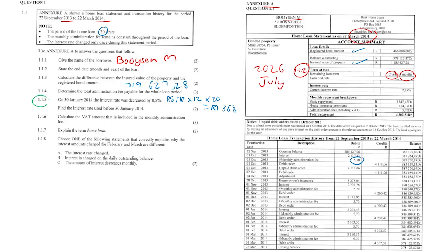Question 1.1.5: On the 30th of January 2014, the interest rate was decreased by 0.5%. Find the interest rate used before the 30th of January 2014. The current interest rate is 7.25%, so we add back the 0.5% — it was previously more — giving us 7.25 + 0.5 = 7.75%.